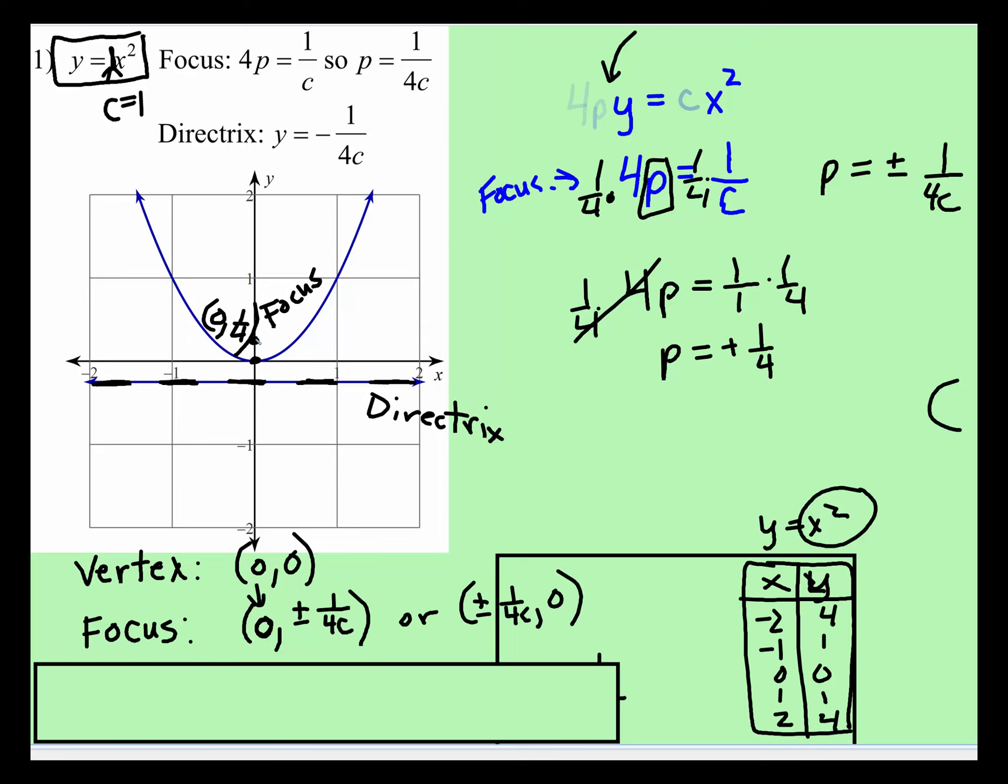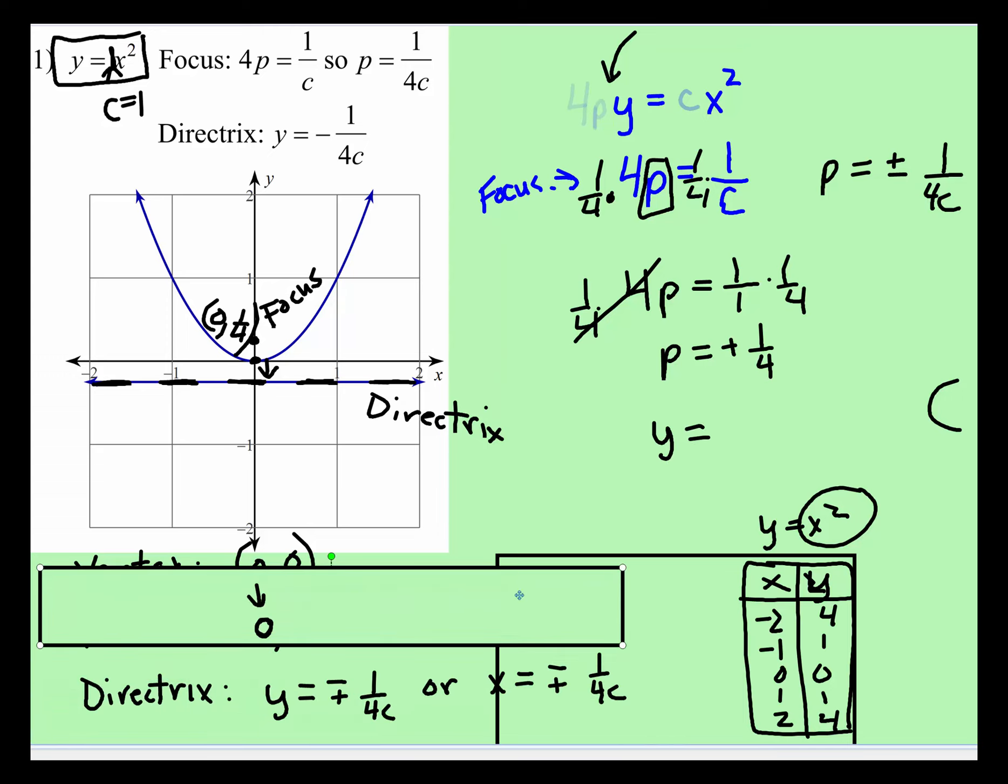The directrix is the exact same distance from the vertex, but in the opposite direction. And notice, the directrix is a horizontal line. So y is equal to, y is equal to the opposite of 1 over 4c. So in this case, y is equal to the opposite, in this case, the focus was, the coordinate value is 1/4. So the equation of that line is y equals negative 1/4.